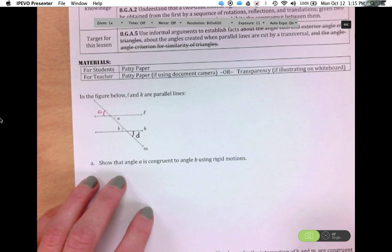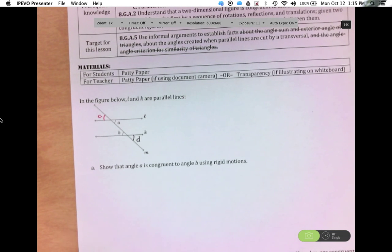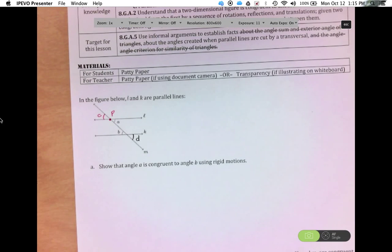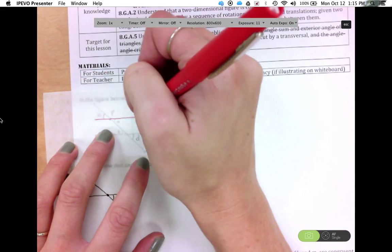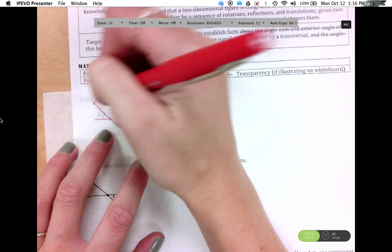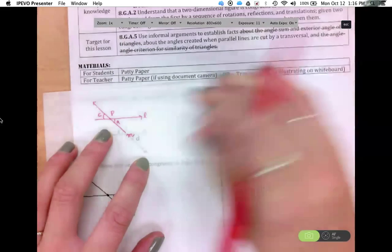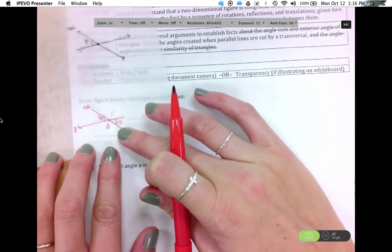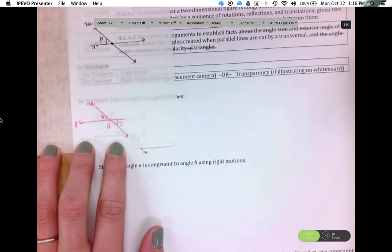And we can say that in two different ways. Angle A is congruent to angle C by vertical angles, or by a 180 degree rotation. And so we have this point here. Let's call it P. So again, students could trace this and say that if they are rotating 180 degrees about point P. So then if they rotate that 180 degrees, then A is mapped to C and C is mapped to A. And so C is congruent to angle A.